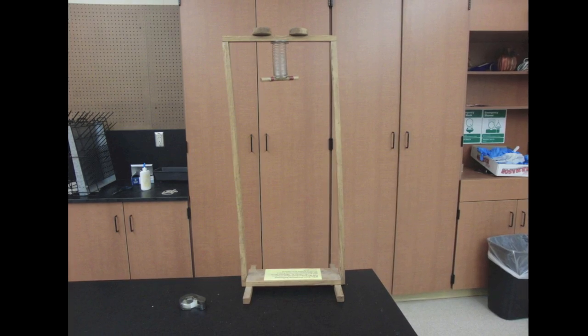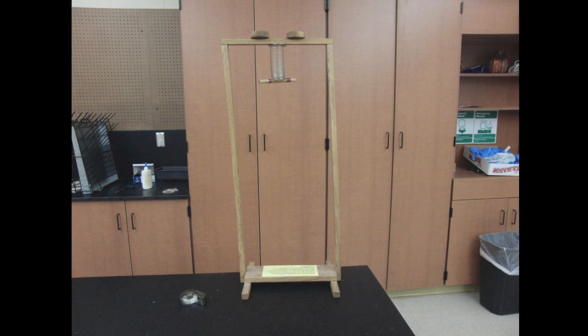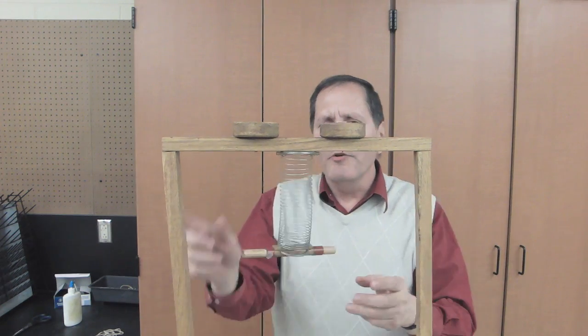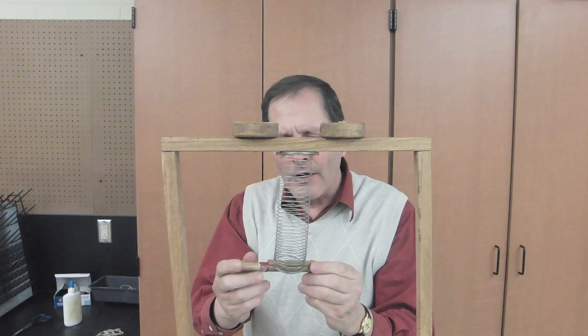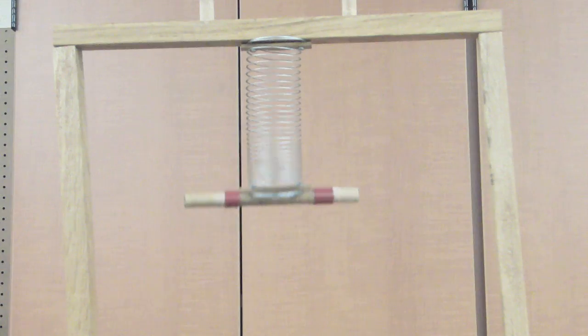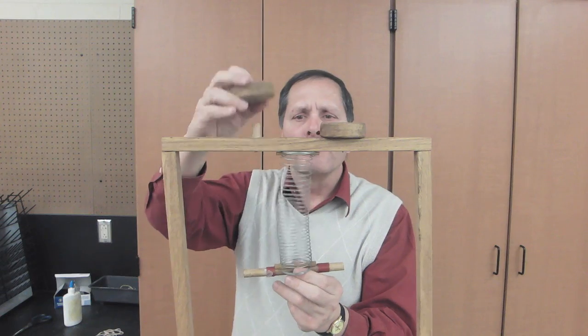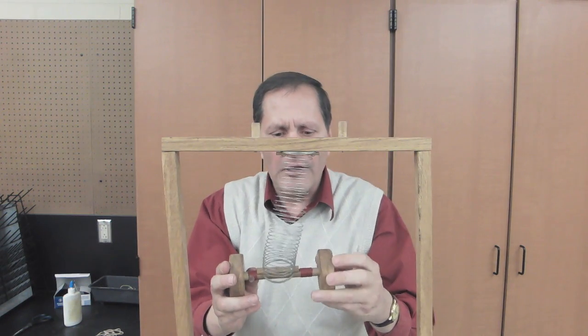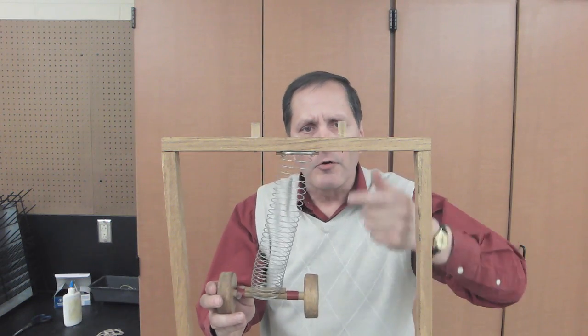This next piece is called a Wilberforce pendulum. It varies between a vertical up and down movement and a torsional or twisting motion. Our Wilberforce pendulum has a wooden frame to support this slinky spring. It has a dowel attached to the bottom part of it. And by itself, this piece will simply just bounce up and down. There's these wooden wheels that simply slide in and out to adjust the movement so that the torsional twisting matches the vertical up and down movement.